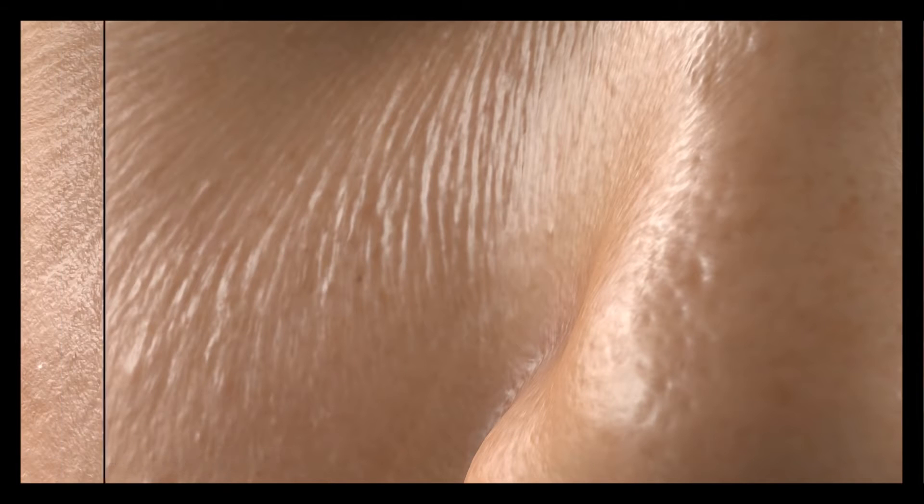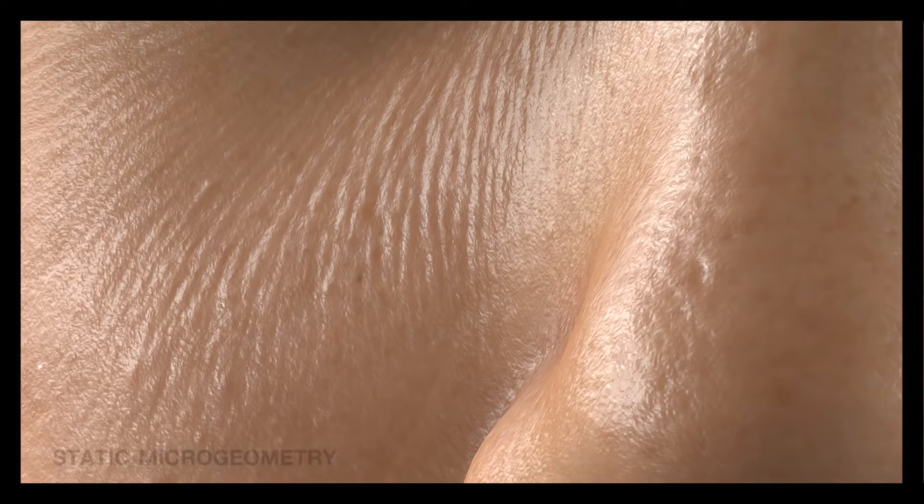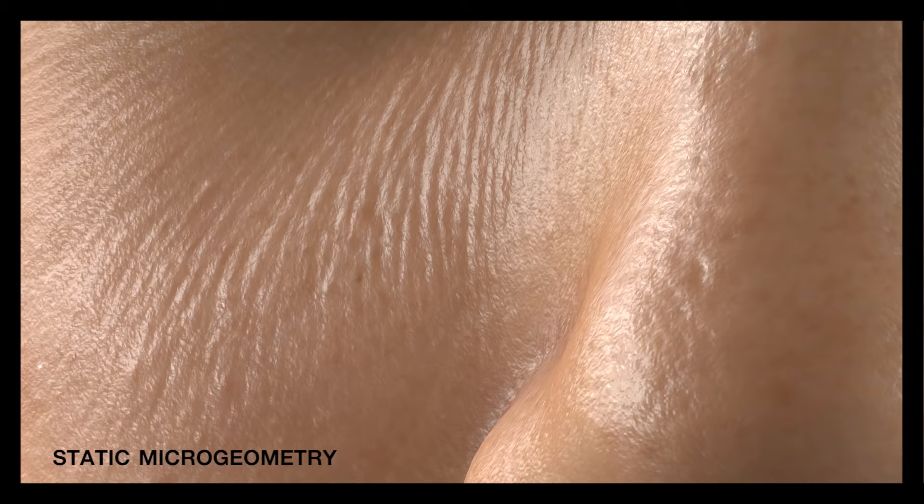Seen without microstructure, the mesostructure scans on their own miss significant aspects of realistic skin appearance. Adding a static microstructure displacement map improves the skin-like quality, but doesn't look natural where the skin compresses and stretches significantly.